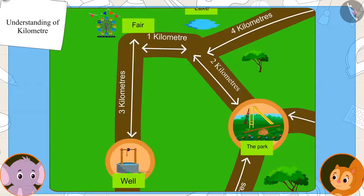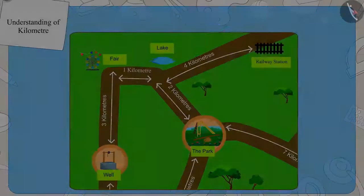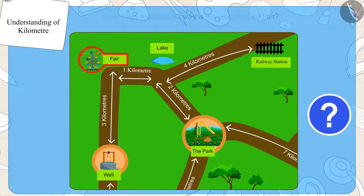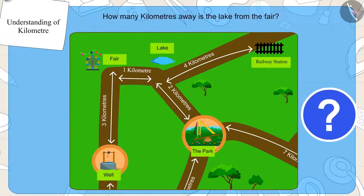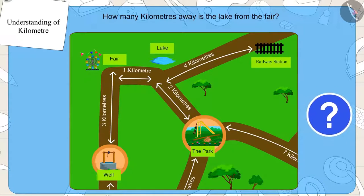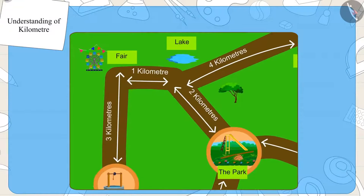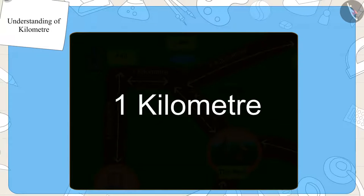Appu said to Chanda, Kids, can you see this map and tell how many kilometers away from the fair is the lake? The distance from the fair to the lake is one kilometer.